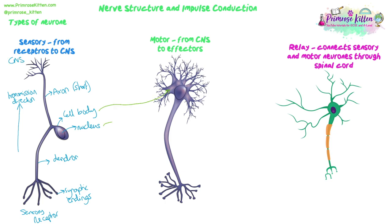The motor neuron takes impulses from the central nervous system to the effectors. It still has a cell body with a nucleus, but the cell body is at the end of the axon, not in the middle of the neuron. It still has synaptic endings at one end and those feathery branches called dendrites at the other end. The cell body tends to be in the central nervous system, and transmission direction is away from the cell body down towards the synaptic endings. It's got a long axon, often transmitting signals over quite a long distance, and those synapses at the end synapse onto an effector, which could be a muscle or a gland.